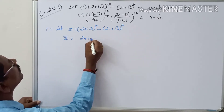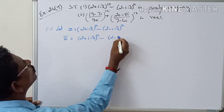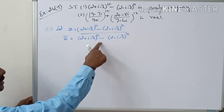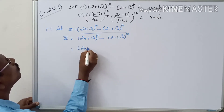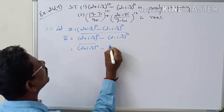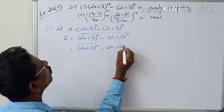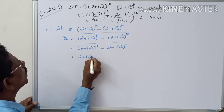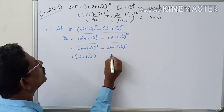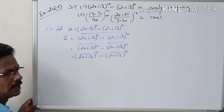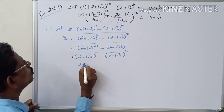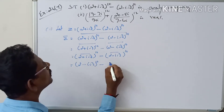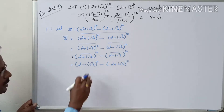z̄ equals the conjugate of (2 + i√3)^10 minus (2 - i√3)^10. Using the properties z̄1 minus z̄2 equals the conjugate of z1 minus the conjugate of z2, and z^n bar equals z̄^n, this gives (2 + i√3)^10 bar minus (2 - i√3)^10 bar. So z̄1 becomes (2 + i√3)^10.